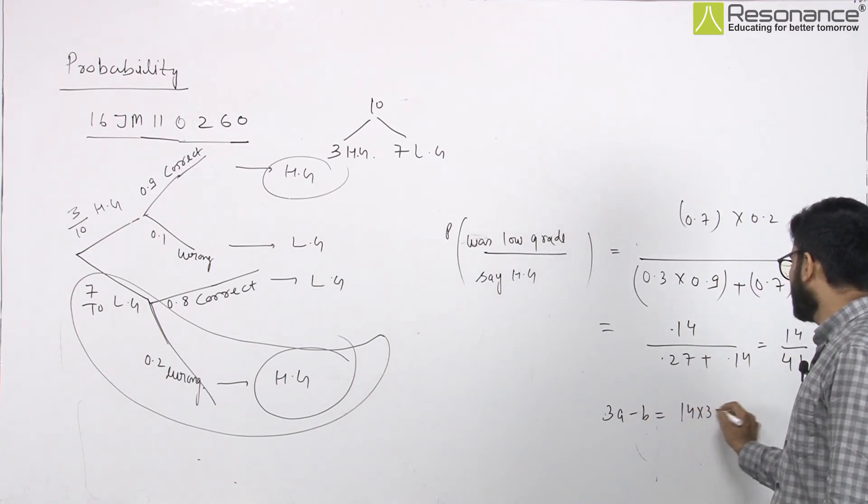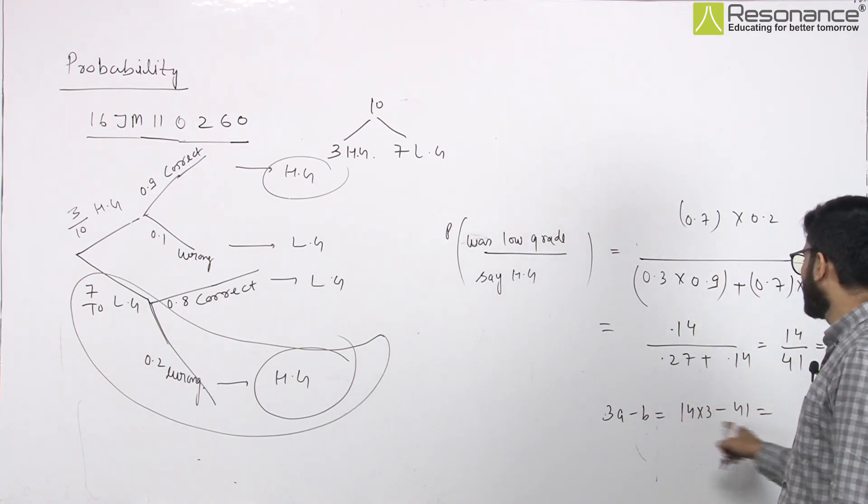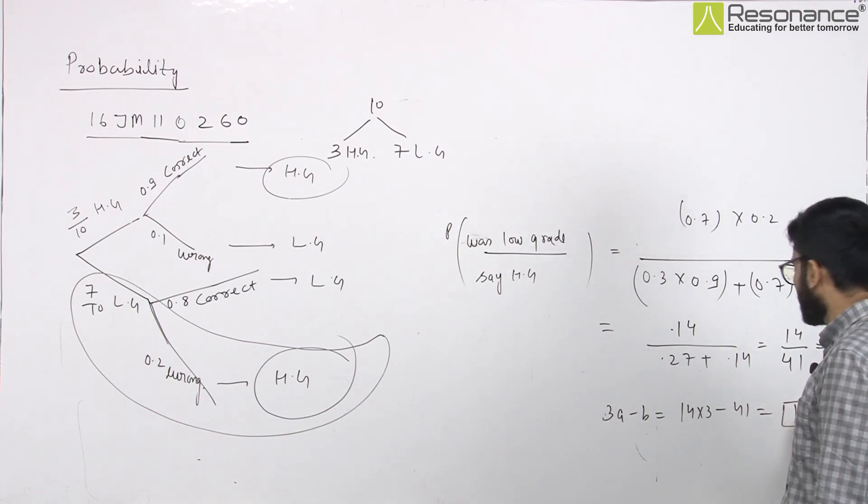So, 3A is how much? 14 into 3 minus 41. It means that 42 minus 41 is 1. Answer.